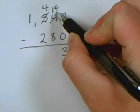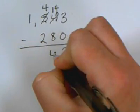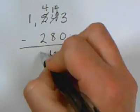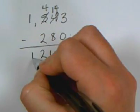So now I can do 14 minus 8 is 6, 4 minus 2 is 2, 1 minus nothing is 1. Let's do one more.